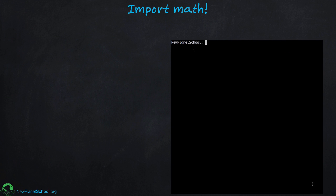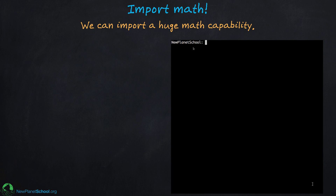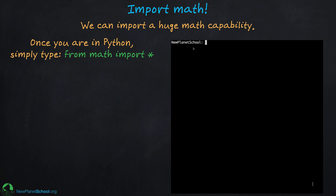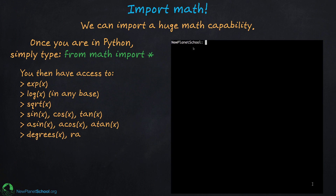Now let's talk about how we can do more math. Python is a small language on purpose, but all the capabilities you might want are available — you just need to import them. So the first thing you'll often do is import something you need. To use the full math capabilities, we type `from math import *`. The star means import everything from the math library, giving you access to all those math functions.